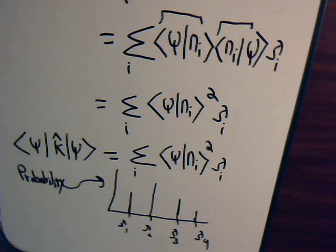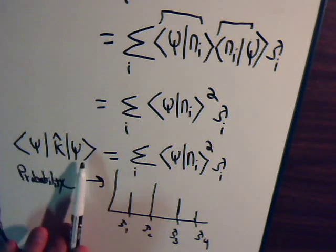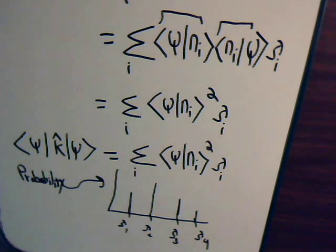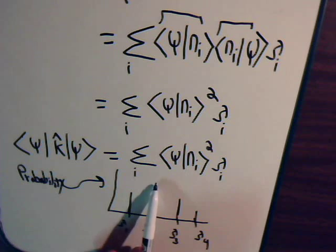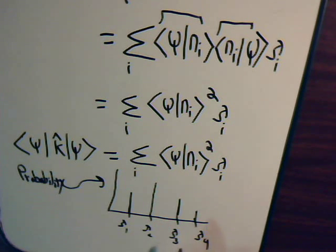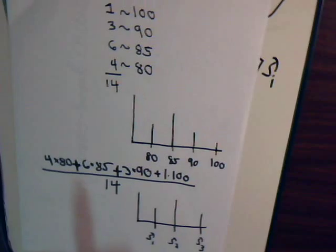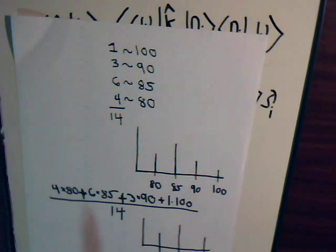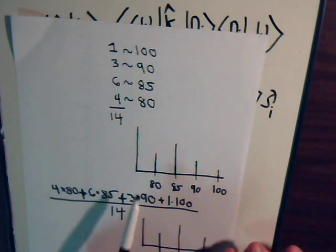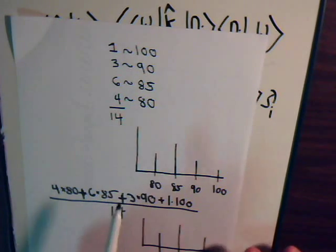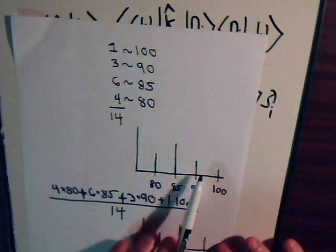And that is what is called the expected value of the operator. And this is how it's obtained, right here. And again, this graph right here, where we have a certain value, a certain eigenvalue, and associated probability of occurring, another eigenvalue and the probability of obtaining that particular eigenvalue, and so forth. That is very much analogous to what we discussed earlier here, where we had test scores, where those who got 80, that was 4, the number of people that scored 85 was 6, and so forth.